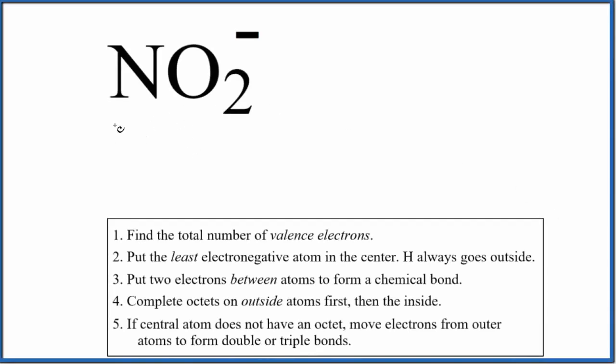Let's draw the Lewis structure for NO2 minus. This is the nitrite ion. The first thing we do for Lewis structures, we count the total number of valence electrons.